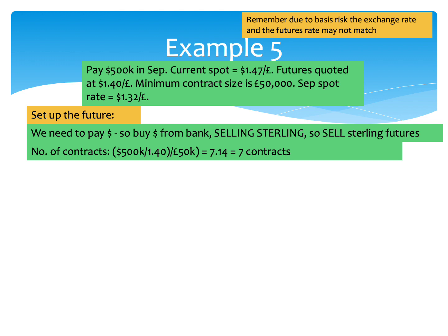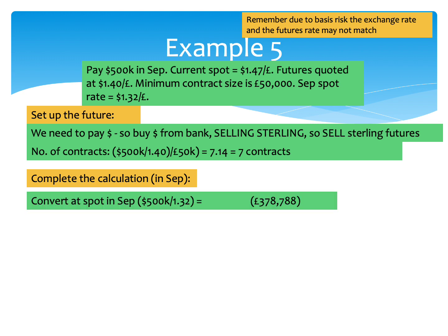So I need to sell sterling futures now and the number of contracts will be seven. Once you've got that set up, you can complete the calculation. In September, the underlying transaction just goes ahead as if you've not done any hedging. We need to pay $500,000 in September — that's going to get converted at whatever the exchange rate in September happens to be. With the exchange rate at $1.32 to the pound, that $500,000 is going to cost us £378,788.